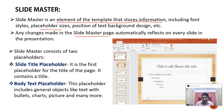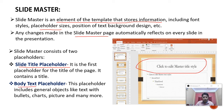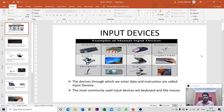The master slide consists of two placeholders. The first is the title slide placeholder, generally used to hold the title of the page. The second is the body text placeholder, also called a subtitle, used to hold text with bullets, charts, pictures, and more.